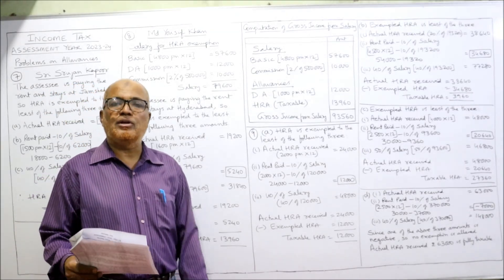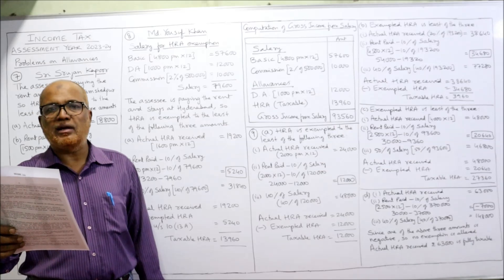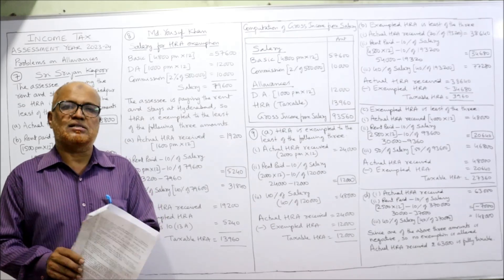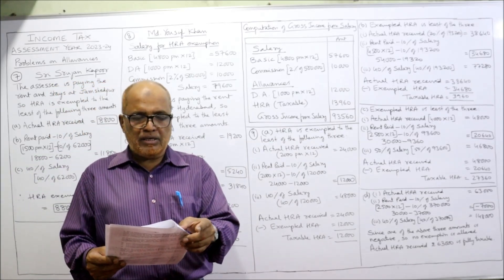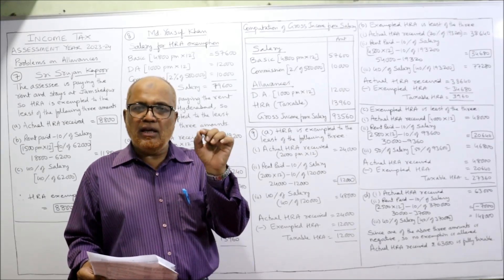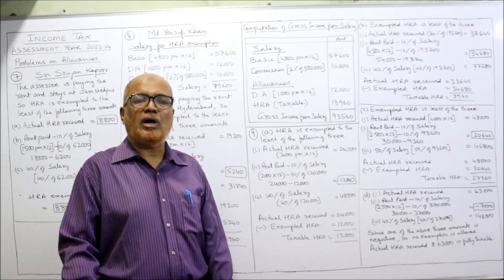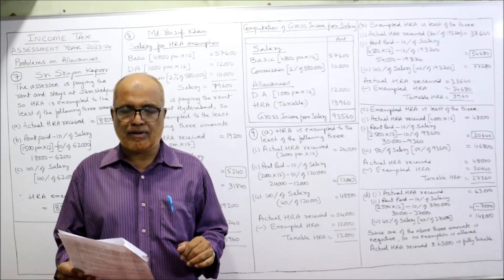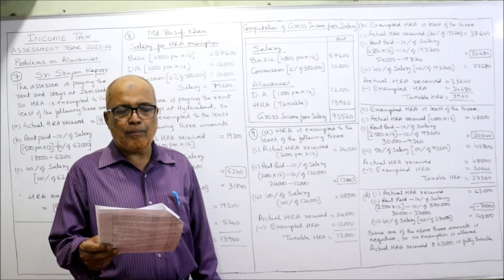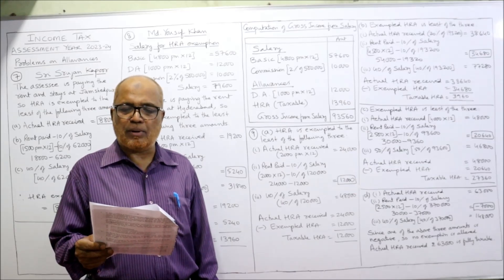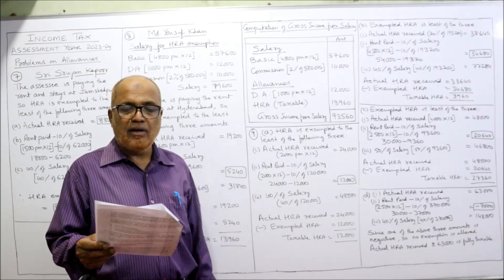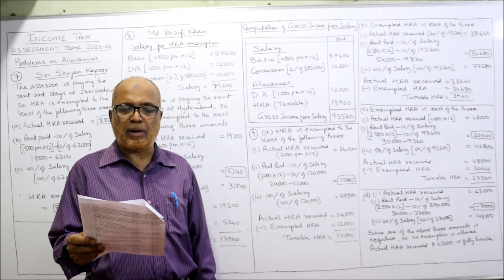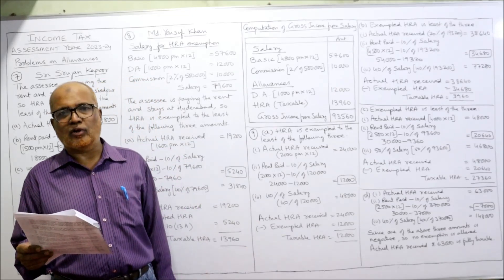Now the 9th problem: find the amount of HRA to be included in income under the head salary for cases A, B, C, and D. Case A: basic pay ₹10,000 per month, HRA ₹2,000 per month, DA 15% of basic, actual rent paid ₹2,000 per month in Guntur — other town, so 40% applies.